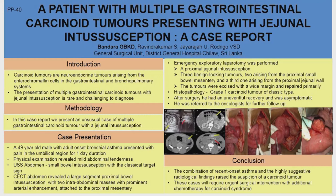We could confirm our diagnosis both histologically and biochemically. This case was a rare finding because the recent onset asthma and the radiological findings presented us a window to diagnose a rare case. For the management of carcinoid syndrome, we had to refer the patient for chemotherapy. Thank you.